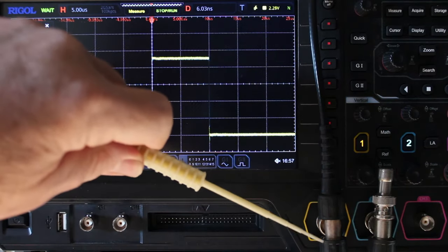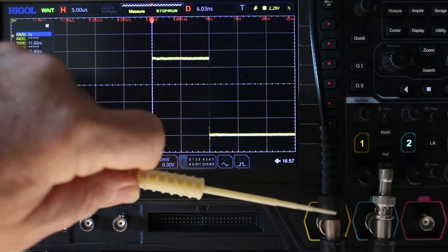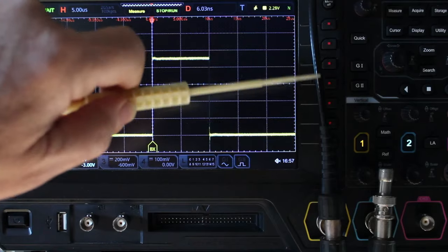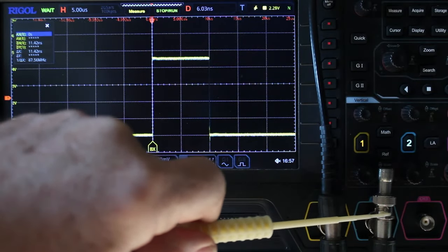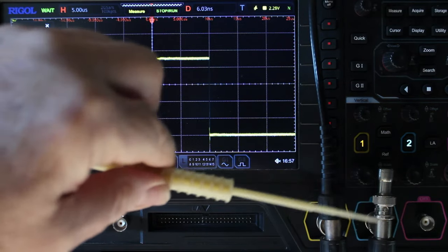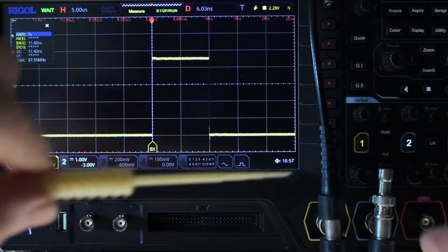So our signal comes in down here on this piece of coax, goes across this T and as it flies by the channel one here it shoots on down the seven foot piece of cable here and comes in over on the other side where there's another T. The scope itself has got one mega ohm input so it doesn't properly terminate this. So I've put a 50 ohm termination on the end of the cable here.